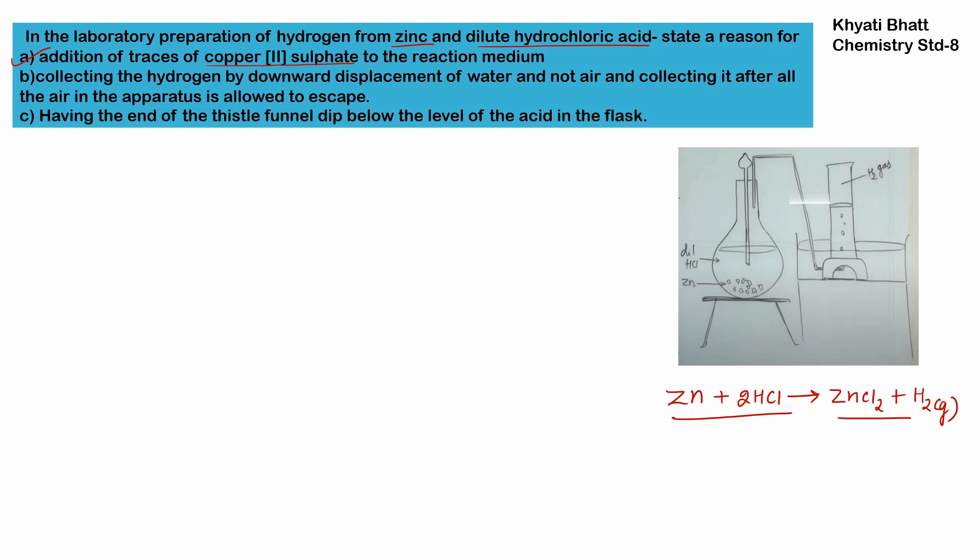While performing this reaction, we add traces — one or two drops — of copper sulfate along with the dilute hydrochloric acid. The reason for this is to enhance the rate of reaction, as this reaction is slow. So to increase the speed of reaction, we add copper sulfate to the reaction medium.